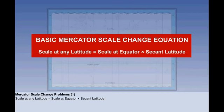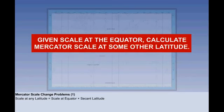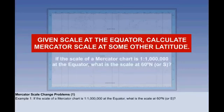Let's now apply this to the first type of problem: given the scale at the equator, calculate Mercator scale at some other latitude. A worked example is the simplest way. If the scale of a Mercator chart is 1 to 1 million at the equator, what is the scale at 60 north or south? Start with the basic equation and then substitute into it what you know. The rest just drops out.